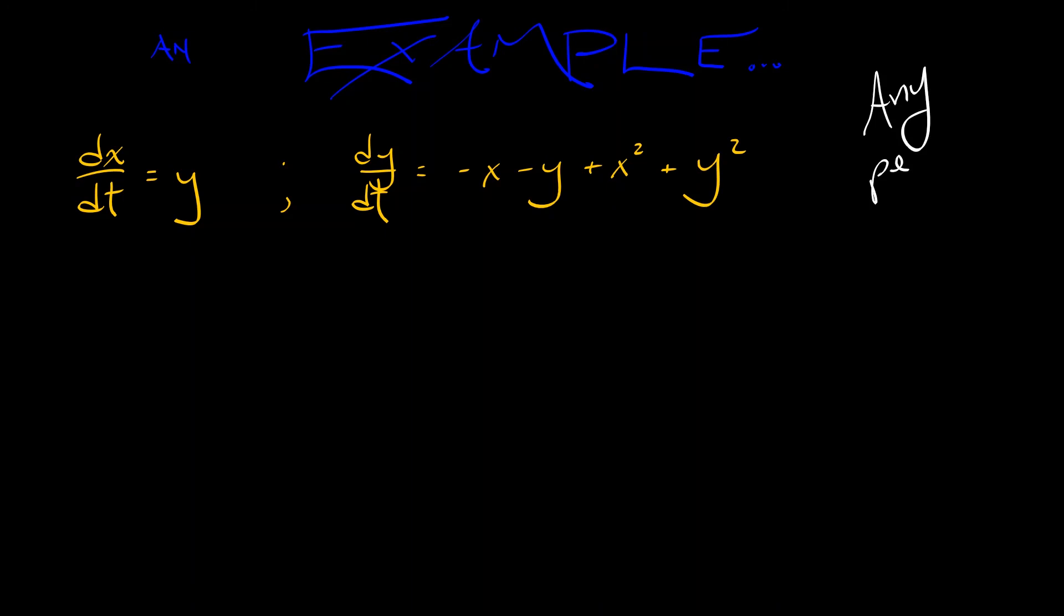Now, you could find equilibrium to do things like that. But let's just ask the question, are there any periodic orbits? Here's how we're going to try to use the Bendixson-Dulac criterion. I can write this as a vector field.